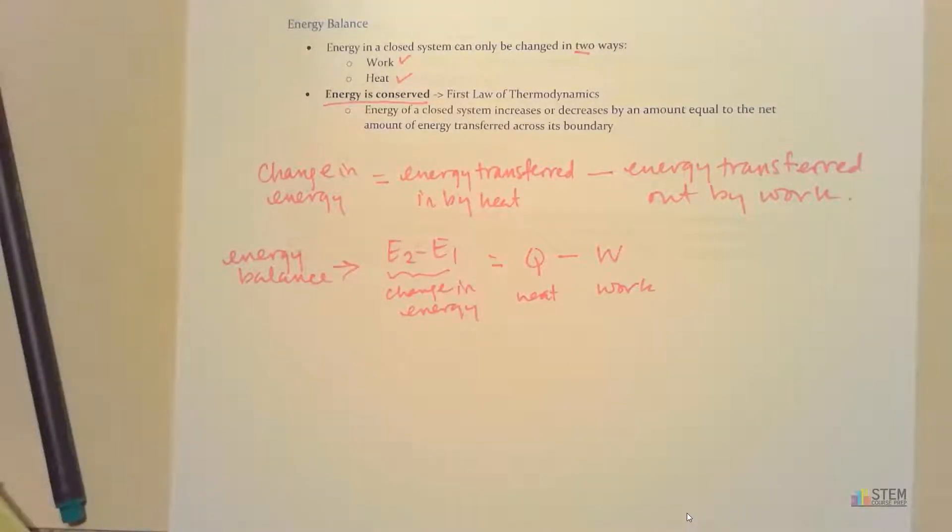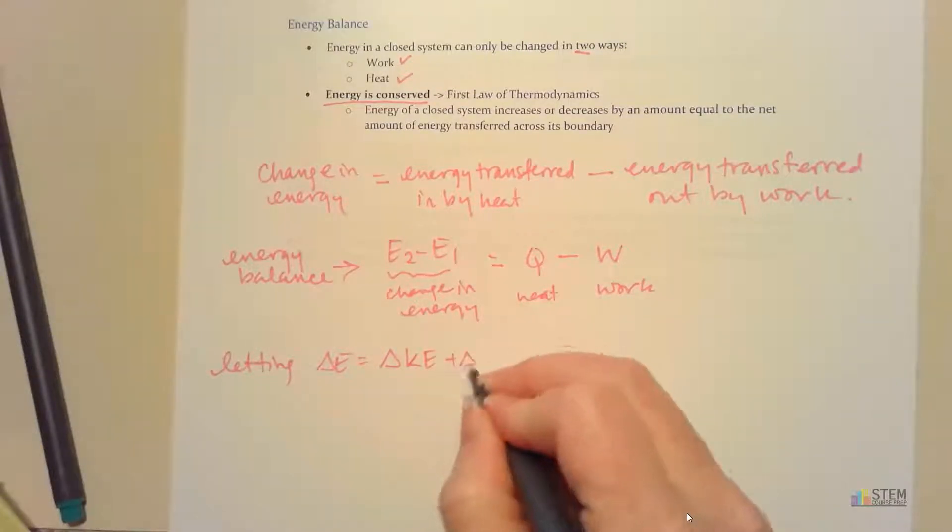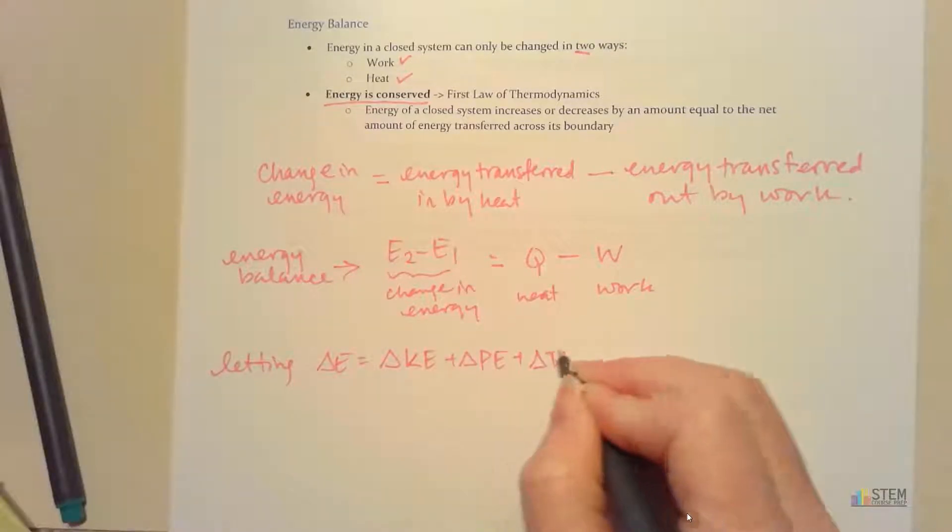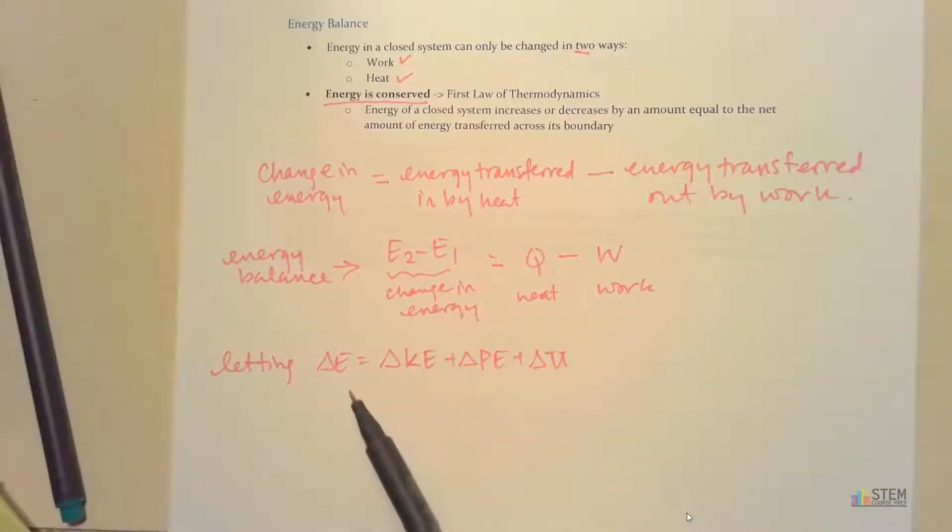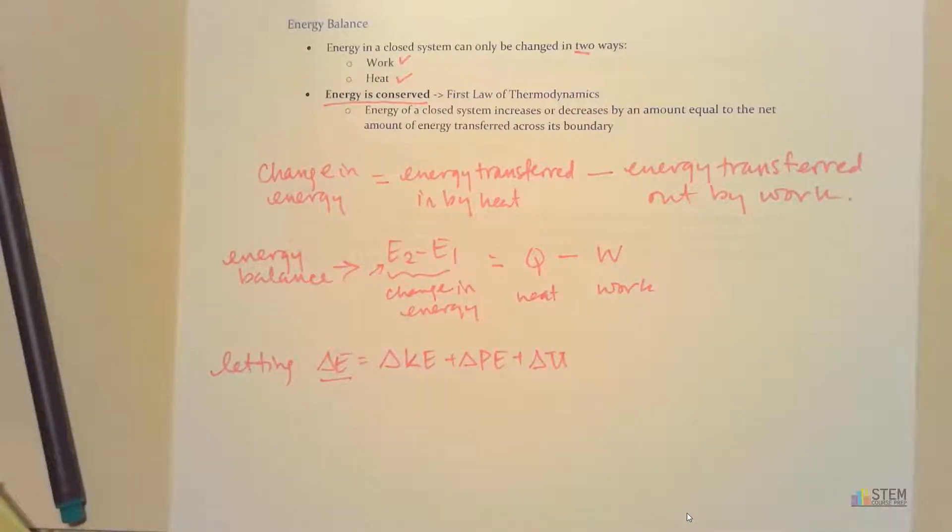If you remember, in one of the previous videos, we talked about a different equation for change in energy. The change in energy has to be the same if we're talking about the same system. So that means that we can let delta E also equal to the delta E we had before, which was delta KE plus delta PE plus delta U. So our change in energy before was the change in kinetic energy plus the change in potential energy plus the change in internal energy. This delta E has to be the same as this delta E. It can't be different because we're talking about the same system here.